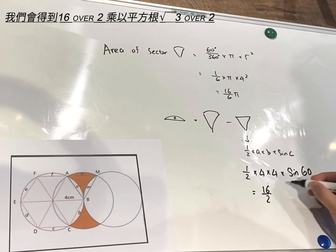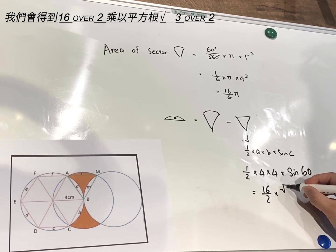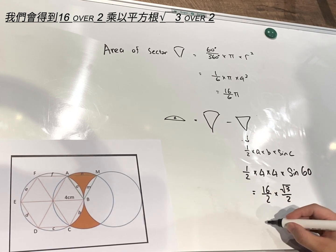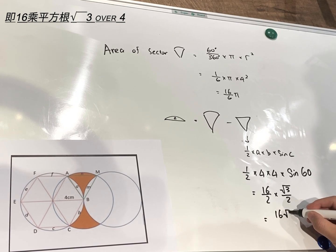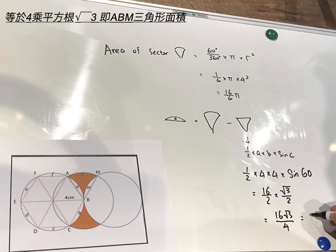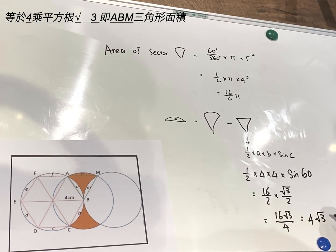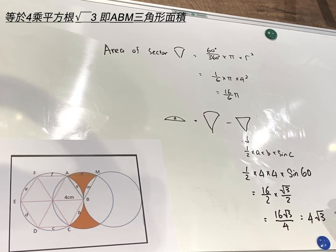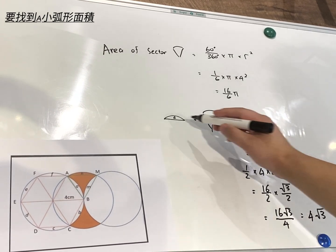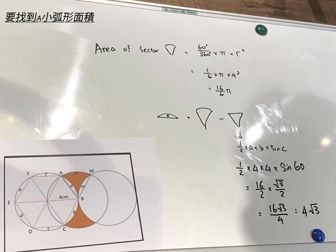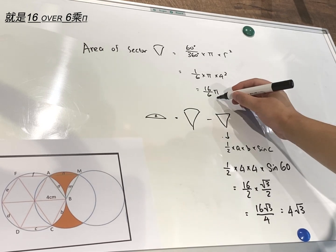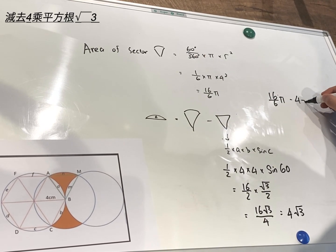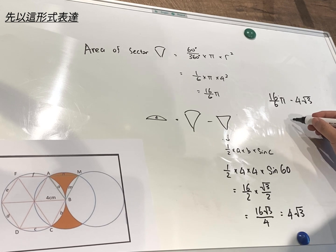We get 16 over 2 times sine 60, and sine 60 we replace with √3 over 2, giving us 16√3 over 4, which equals 4√3. So the triangle area is 4√3. To find one tiny sector area, we do 16π over 6 minus 4√3, and we leave it in that form for now.